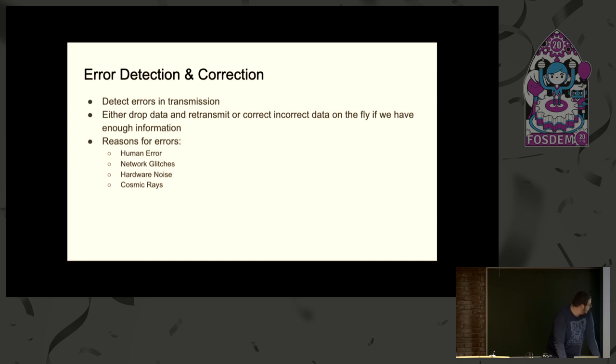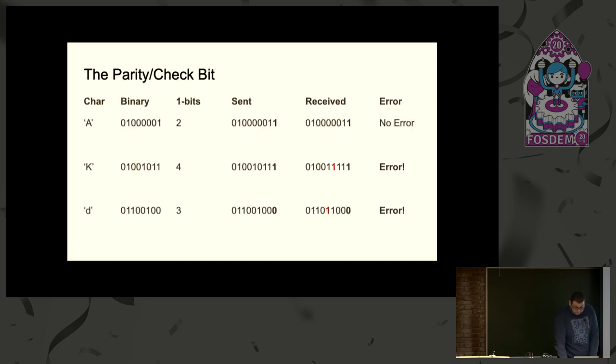So, why do we have errors in the first place? It could be human error, network glitches, or something more random such as noise on a chip or cosmic rays interfering with the chip. All of these things can cause us to receive something different or the data to send something different. So, by a show of hands, how many people have heard of a parity bit? Pretty much the whole room. Cool.